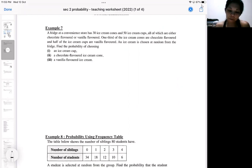So in this question, we got a fridge at a convenience store and we got 30 ice cream cones and 50 ice cream cups. So the ice cream come in either cones or cups. So I got 30 cones here and I got 50 cups. Organize our information first.